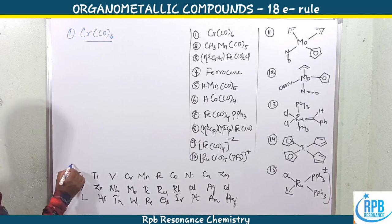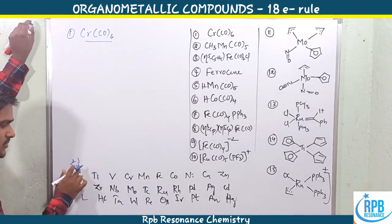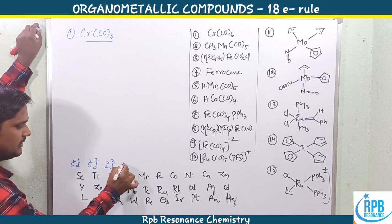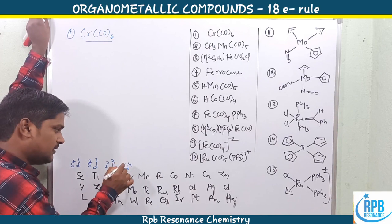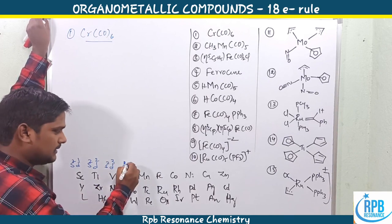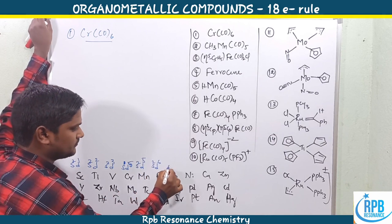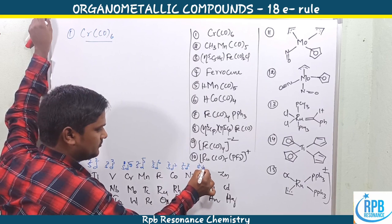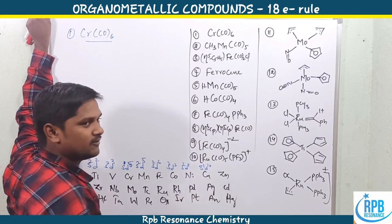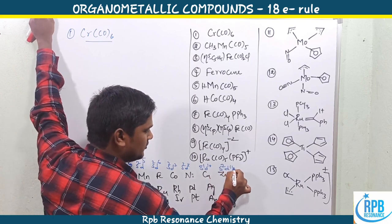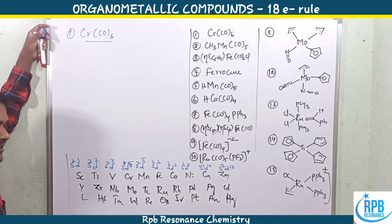The outermost valence electronic configurations are as follows. The first element entering the d-orbital is s²d¹, then s²d², s²d³, and s²d⁴. Originally chromium is s²d⁴, but it lacks only one electron for a more stable half-filled configuration, so one electron is taken from the s orbital, giving s¹d⁵. Then comes s²d⁵ for manganese, s²d⁶ for iron, s²d⁷ for cobalt,